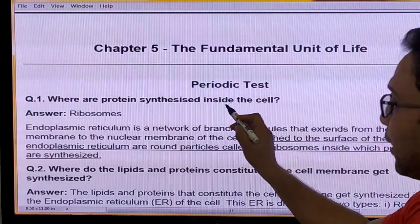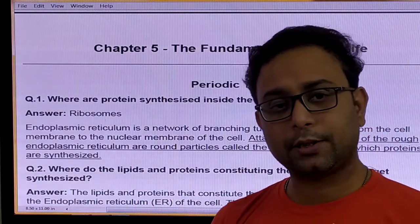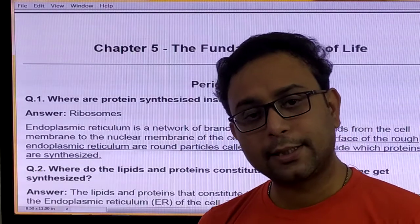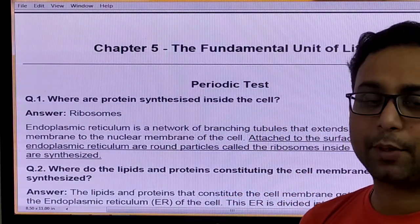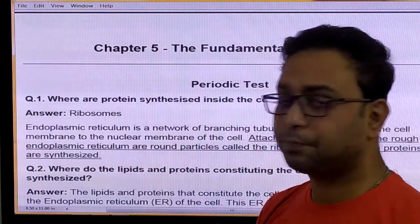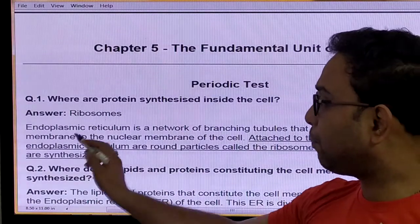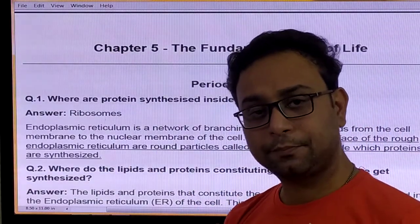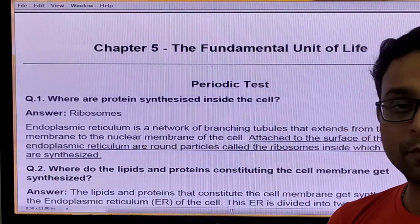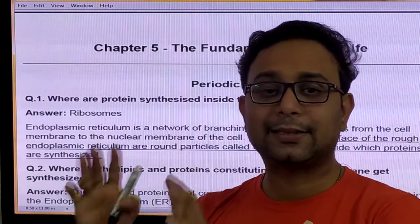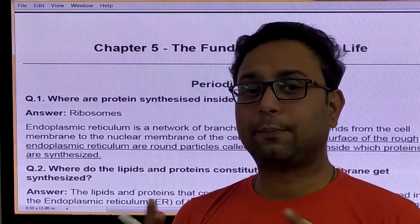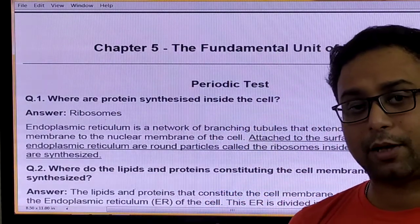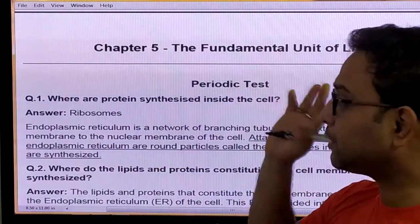Question number one: Where does protein synthesis happen inside the cell? Protein is a very important thing — without protein, any living organism cannot survive. The cell organelle participating in protein synthesis is the ribosome. Ribosomes are present on the endoplasmic reticulum, forming the rough endoplasmic reticulum. Some ribosomes are also present in scattered condition in the cytoplasm. So protein synthesis happens in two sites: in the cytoplasm and on the endoplasmic reticulum. Ribosome is the answer.